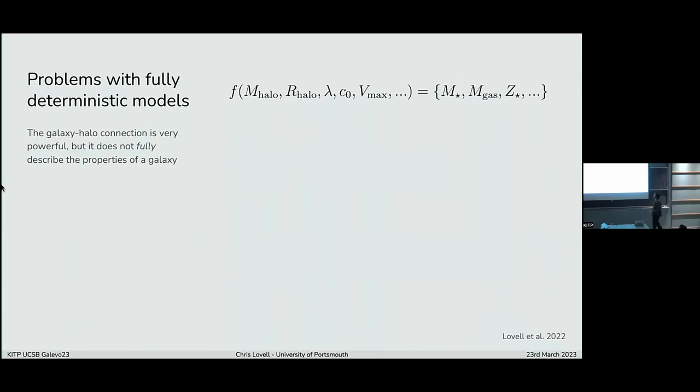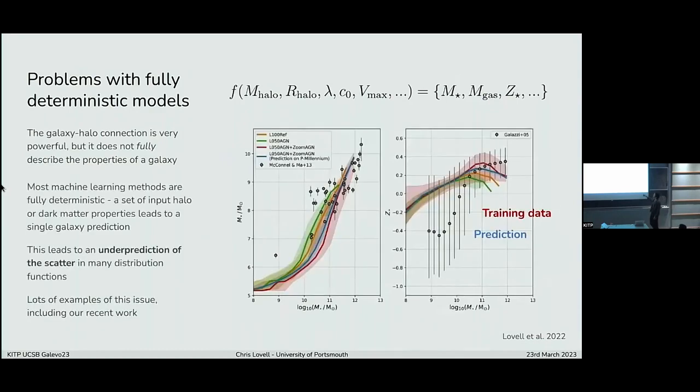So this is all great. But there are some issues with these models. These are fully deterministic models. So you have some set of halo parameters that go in, and that gives you some baryonic galaxy parameters out. But because these are fully deterministic, what you end up doing is actually underestimating the scatter in some of these distribution functions. This is stellar mass against black hole mass, stellar mass against metallicity. The red here is the input training data from the zooms, from the periodic boxes. And the blue is the prediction from this model. The actual scatter around that blue curve is very small. So you're under predicting the scatter at fixed stellar mass.